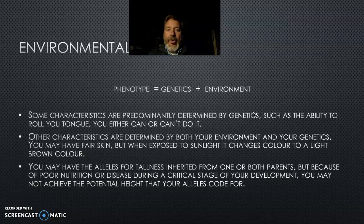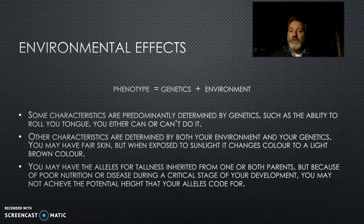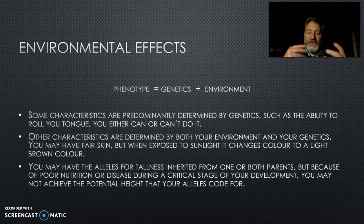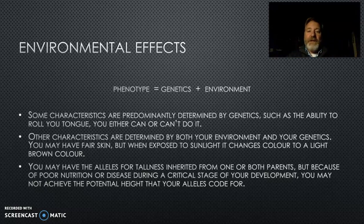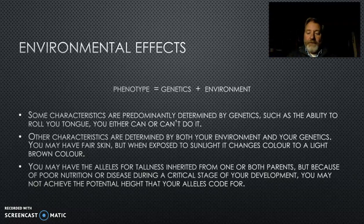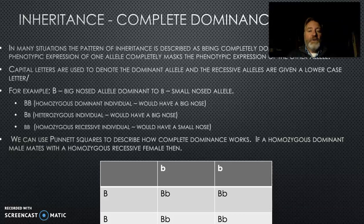Some characteristics are straightforward and purely genetic — for example, whether you can roll your tongue is determined by genes that control the muscle structures allowing tongue manipulation. But other characteristics are affected by the environment. If you go out in the sun and get a tan, you've changed your skin color — that's an environmental effect; you haven't changed the underlying genes but you've changed their expression. Poor nutrition at critical times can also mean you don't achieve your correct height. We talk about three types of patterns of inheritance.